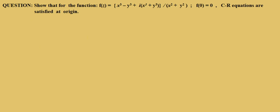The question is: for the function f(z) = (x³ - y³) + i(x³ + y³) upon (x² + y²), with f(0) = 0, show that the Cauchy-Riemann equations (CR equations) are satisfied at the origin.